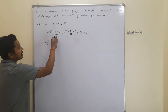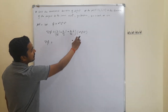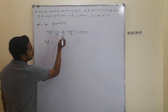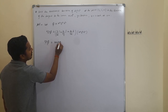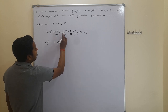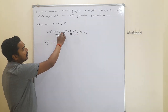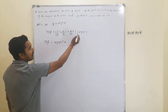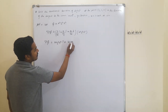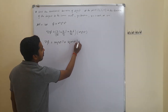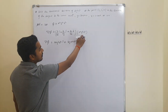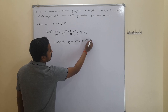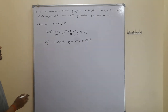Differentiating with respect to x, treating y²z² as constant, gives 2x·y²z² î. Differentiating with respect to y gives 2y·x²z² ĵ. Differentiating with respect to z, treating x²y² as constant, gives 2z·x²y² k̂. So ∇φ = 2xy²z² î + 2yx²z² ĵ + 2zx²y² k̂.